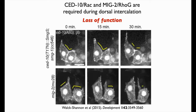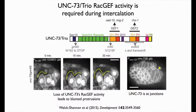Elise also showed via confocal imaging that a CED-10 dominant negative blocks lamellopodial-type protrusions during intercalation — cells can make very thin protrusions but not the lamellipodial types normally seen. The same is true in mig-2 mutants, and the two synergize with one another. So RAC and Rho-G are required for dorsal intercalation. Elise then moved outward to look at possible regulators, and after a genome-wide screen of RAC family GEFs, she landed on TRIO, which in worms is called UNC-73.